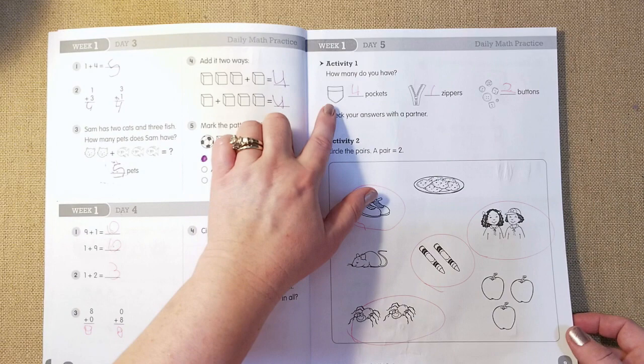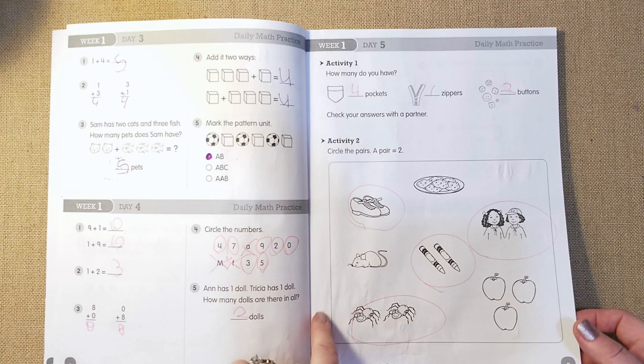So this one says, how many do you have? So this one was fun. She had four pockets. She had one zipper and two buttons on her pants that day. So that was really fun.